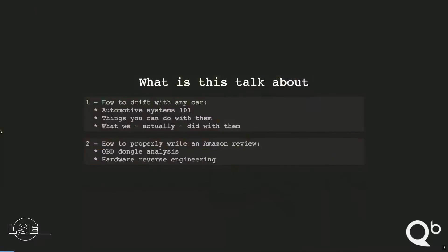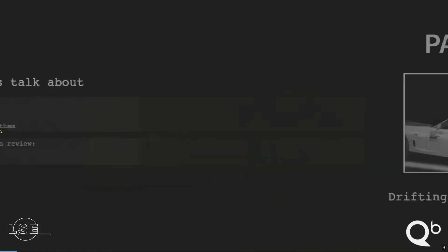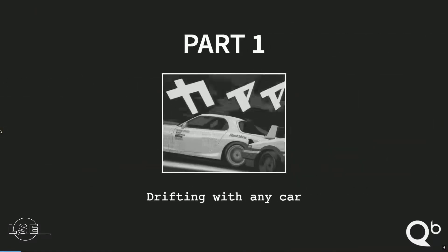This talk will be in two different parts. The first one is how to drift with any car — an introduction to automotive systems, what you can do with them and what we actually did. The second part, which is called 'how to properly write an Amazon review,' covers OBD2 dongle analysis and reverse engineering.